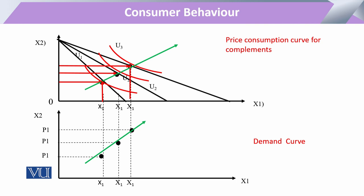The price consumption curve of perfect complements moves along the vertex of the L-shaped indifference curves, because optimal bundles always occur at the fixed-proportion corner. Whatever the shift, the consumer only moves to a new bundle when both goods are available in the fixed proportion. When we join these commodity bundles with the change in price, we get a straight-line price consumption curve. Drawing the demand curve from this diagram — extending the points of x1 and plotting the price of x1 on the vertical axis — we come up with the demand curve as depicted.